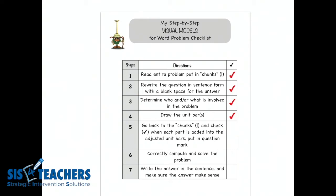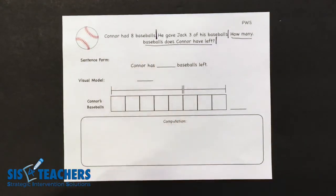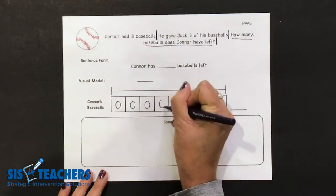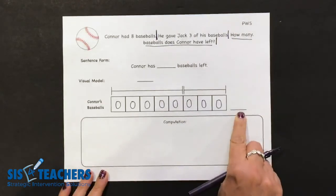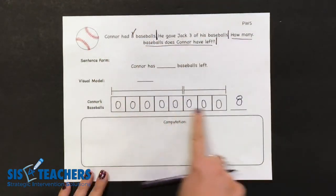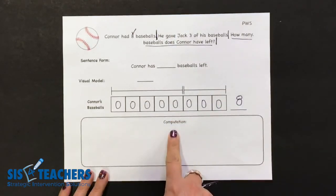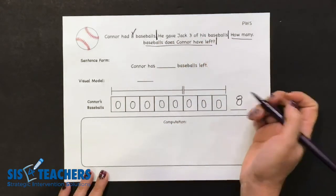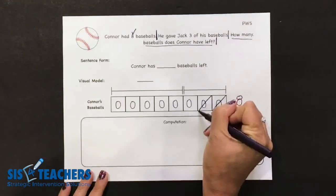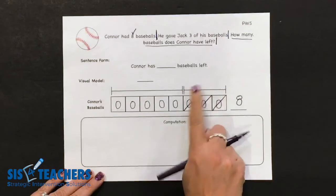Step five is a big step — going back and looking at those chunks, making sure we're transferring the information onto the unit bar, and of course putting in a question mark. Connor has eight baseballs, so I'm going to use a circle to put in my baseball — one through eight. My total unit bar is worth eight because it demonstrates that Connor had eight baseballs. I go back to the chunk and put a check. He gave Jack three of his baseballs, so I'm going to put a diagonal slash through three of them indicating those three belong to Jack. I need to indicate in this bracket what this is talking about, so above I'm going to write Jack, and put the check on my three.